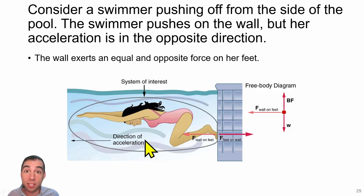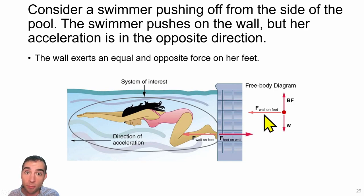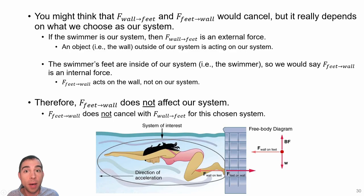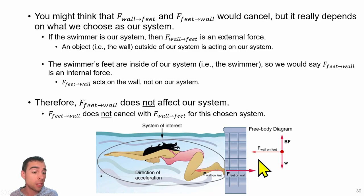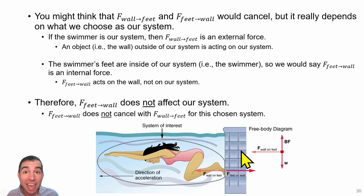If we designate the swimmer as our system, the buoyant force acts up, the gravitational force acts down, and the reactionary force from the wall on the swimmer's feet causes her to accelerate to the left. We need to carefully designate our system boundaries — we're considering only the swimmer, so she just feels a force from the wall. I don't care what the wall feels from the swimmer unless I designate that as my system.